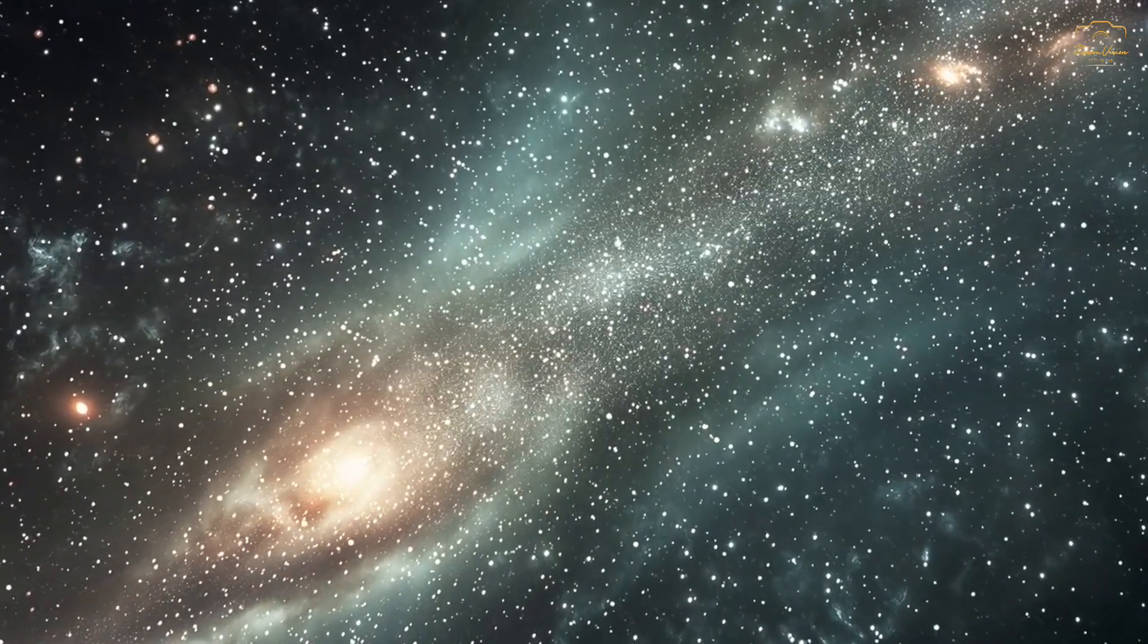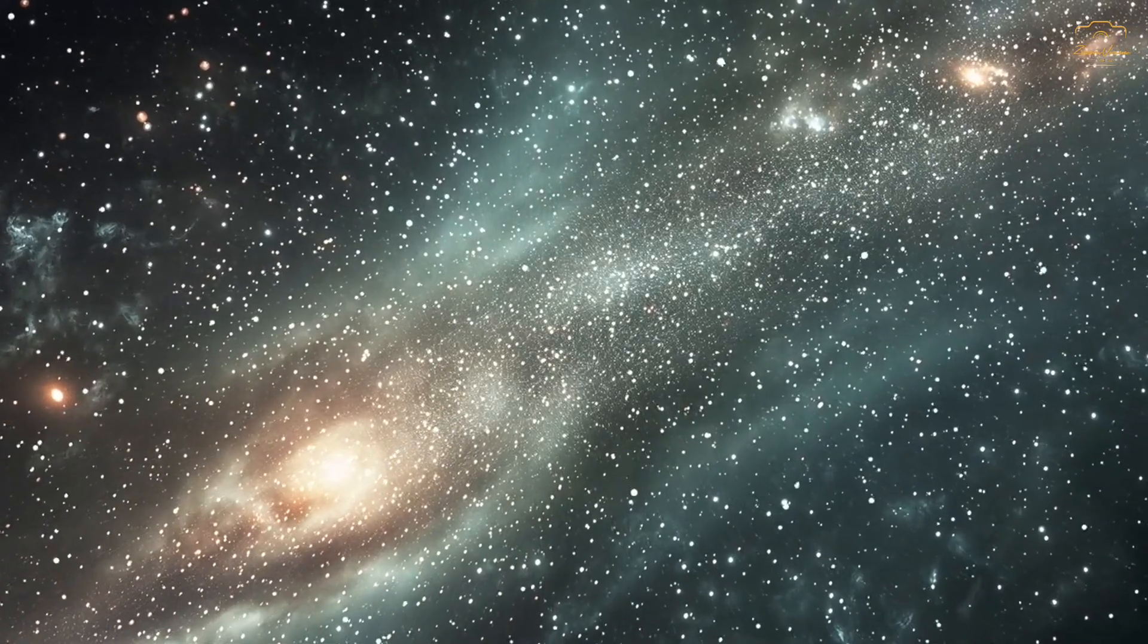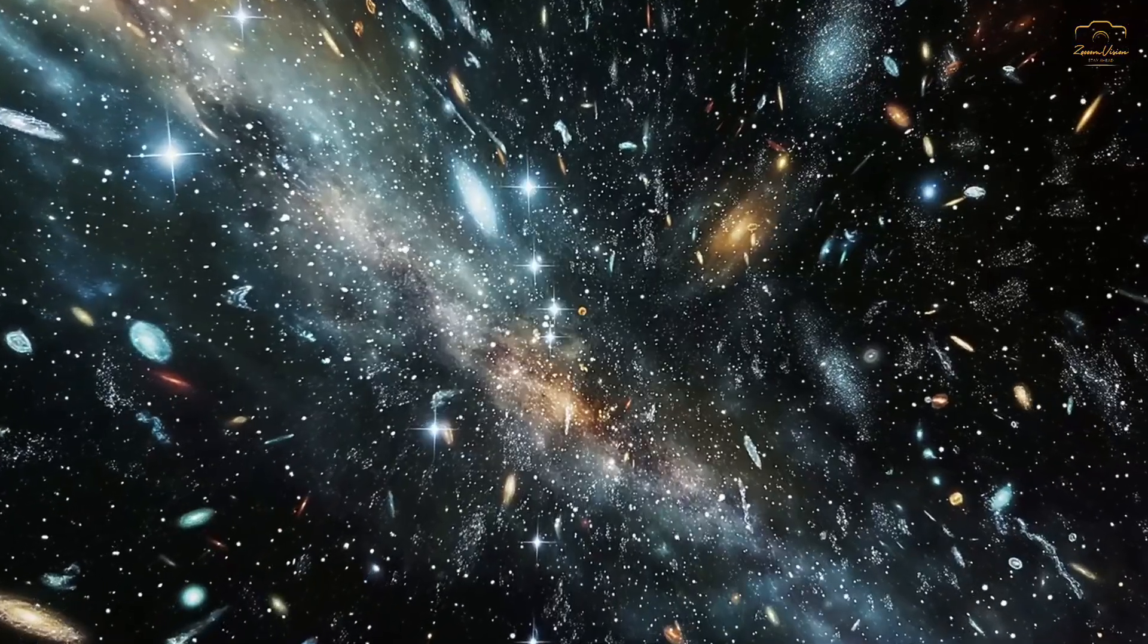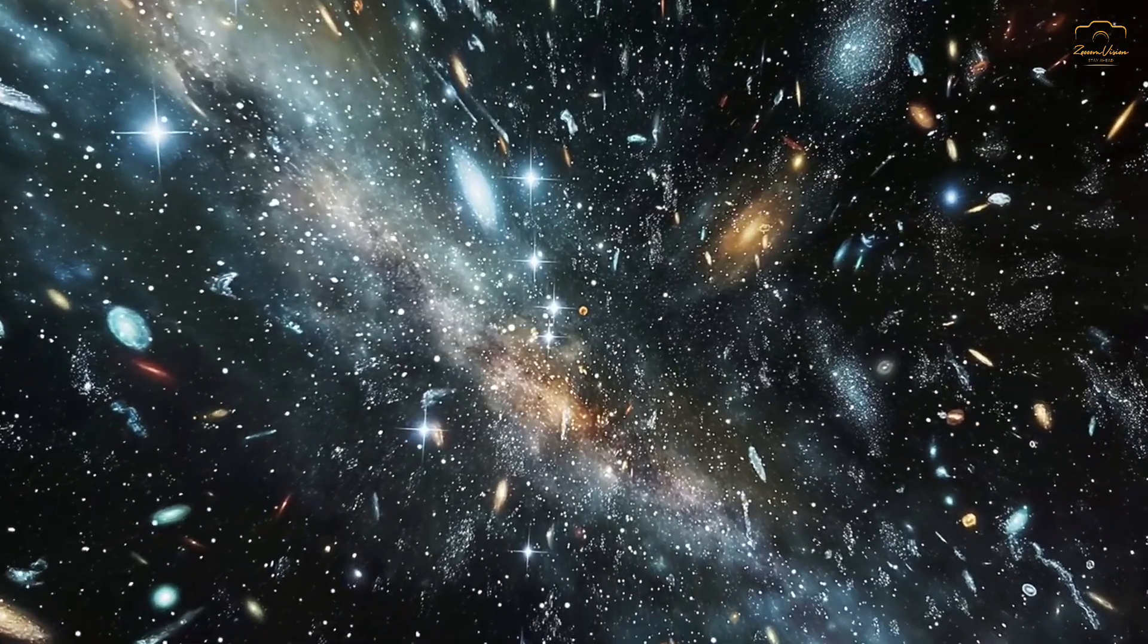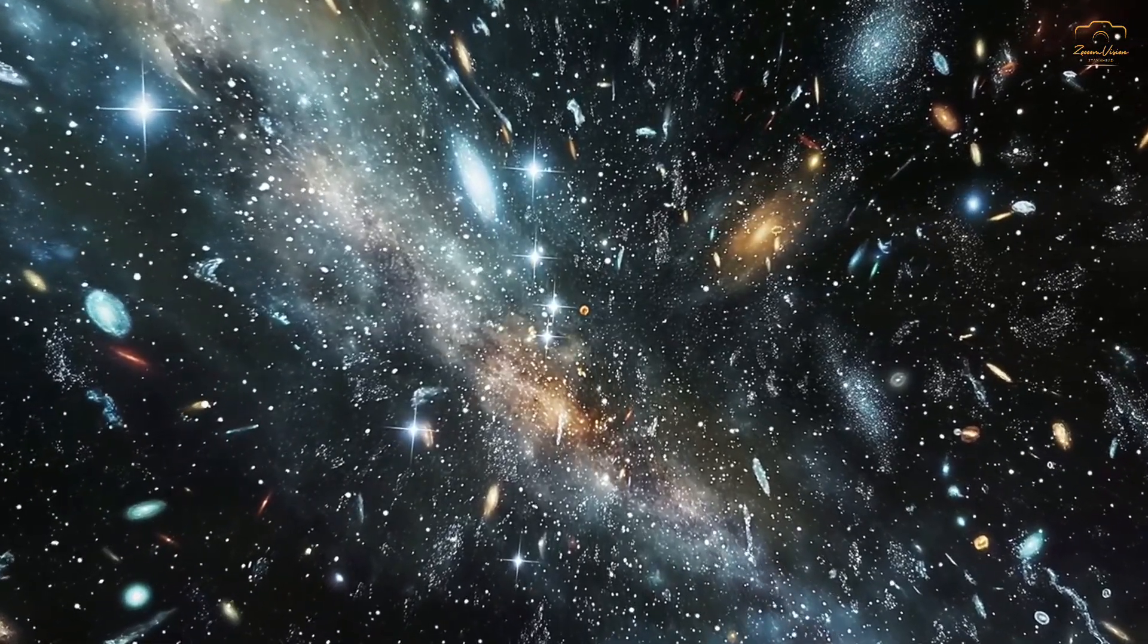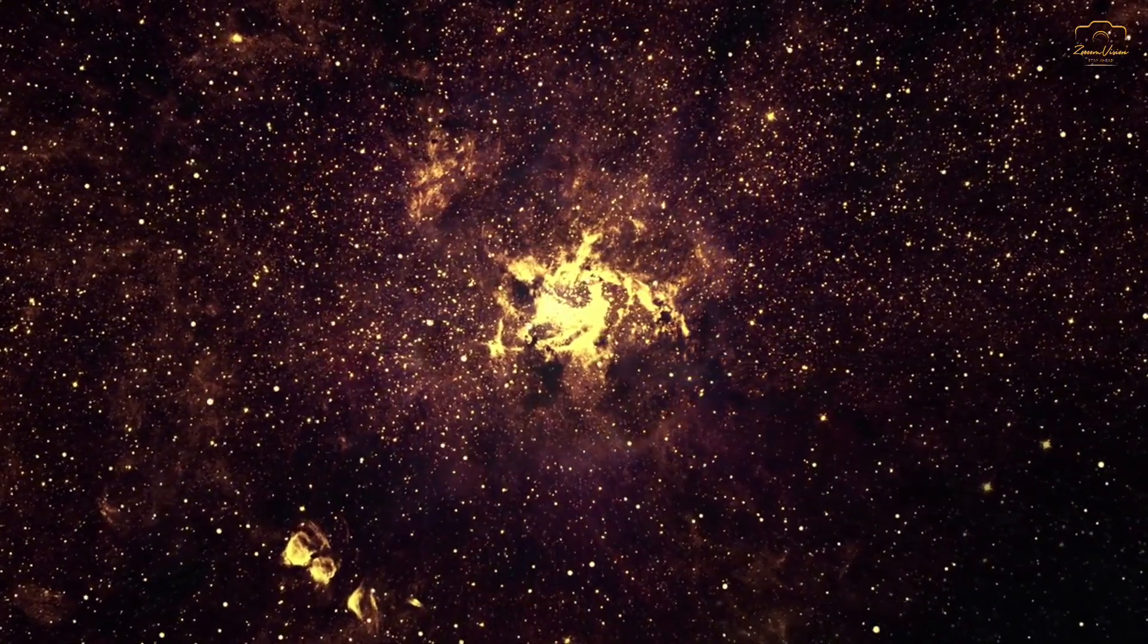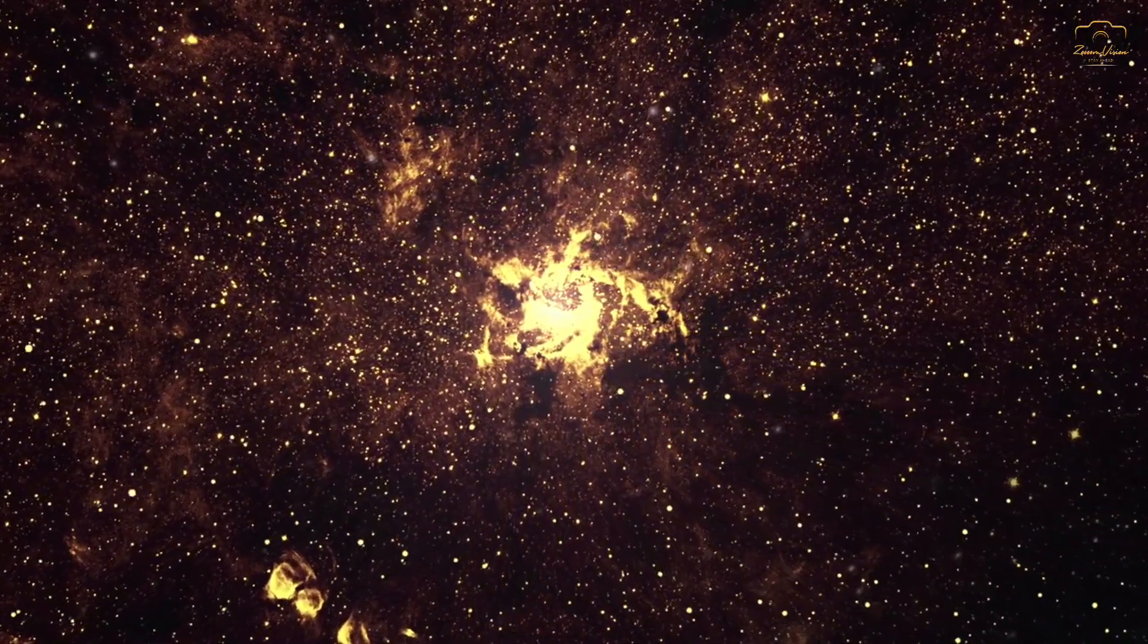It's important to distinguish between the observable universe and the entire universe. The observable universe is the region of space from which light has had time to reach us since the Big Bang. This forms a sphere with a radius of about 46.5 billion light years, giving us a diameter of 93 billion light years.